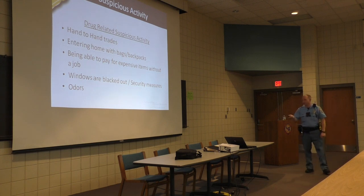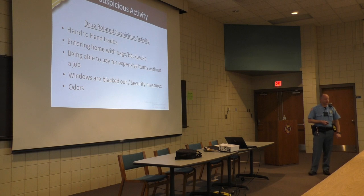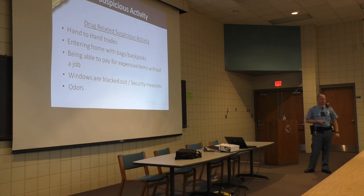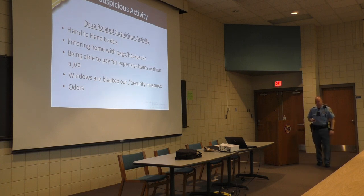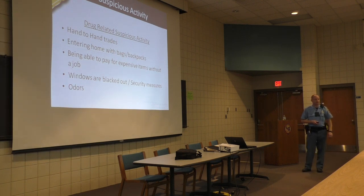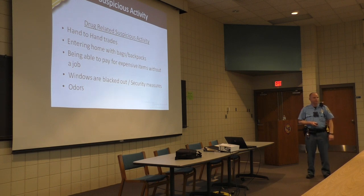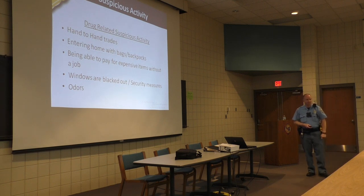Other indicators include exaggerated security measures: tinfoil or blacked-out windows, padlocks, excessive locks, and cameras. Most people don't have cameras at every single door or barred windows. Odors are also a sign — if you're smelling weird odors you've never been able to determine, it's more than likely drug-related. Blue insulation around windows indicates a grow room. An audience member notes they'd be curious about the electric bill; the presenter mentions LEDs and charcoal filters have changed things.